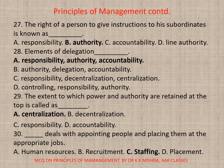Question 27: The right of a person to give instructions to his subordinates is known as — correct option is b) Authority. Question 28: Elements of delegation — correct option is a) Responsibility, authority, and accountability. Question 29: The extent to which power and authority are retained at the top is called — correct option is a) Centralization. Question 30: Deals with appointing people and placing them at appropriate jobs — correct option is c) Staffing.